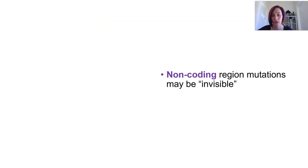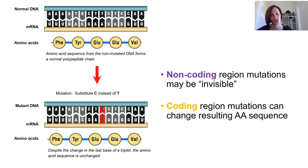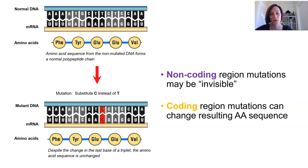If a point mutation occurs in non-coding regions like introns, there may be absolutely no visible effect whatsoever. If a point mutation occurs in a coding region, however, this could change the DNA triplet being read during transcription, resulting in a new mRNA sequence. The amino acid produced from it will then create a non-typical polypeptide, and this is known as a non-synonymous mutation.